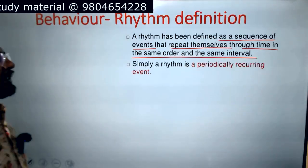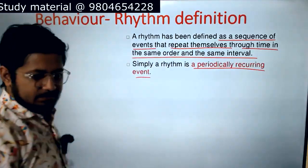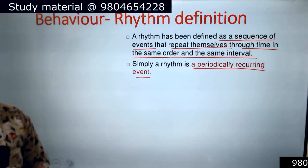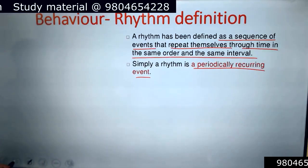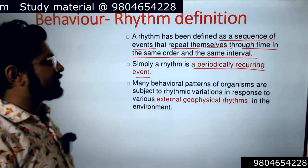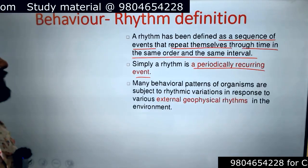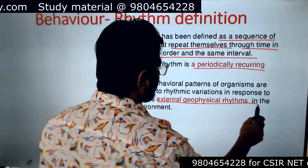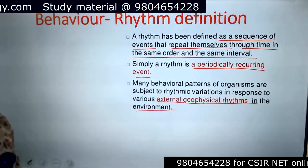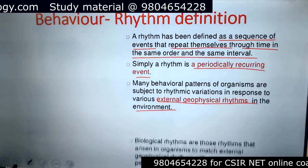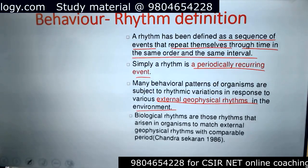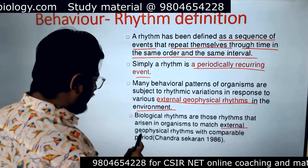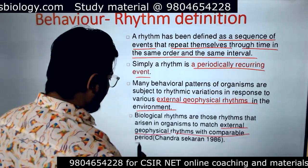A rhythm is a periodically recurring event. We can call it a periodically recurring event because it has been recurring with time. Many behavioral patterns of organisms are subject to rhythmic variations in response to various external geographical rhythms in the environment.